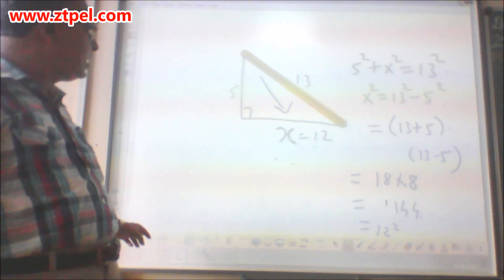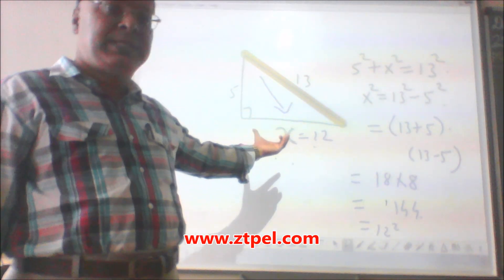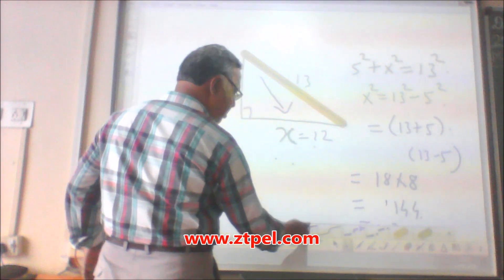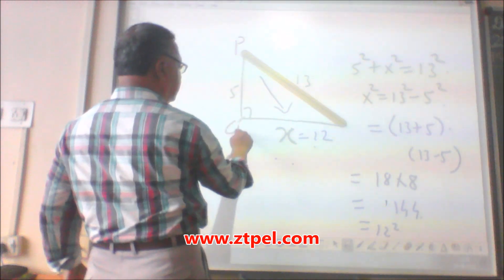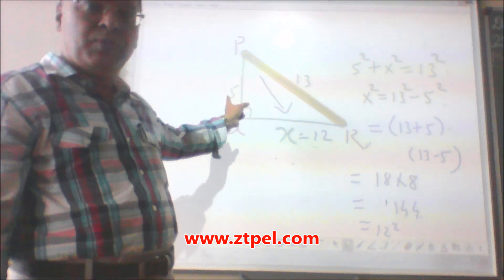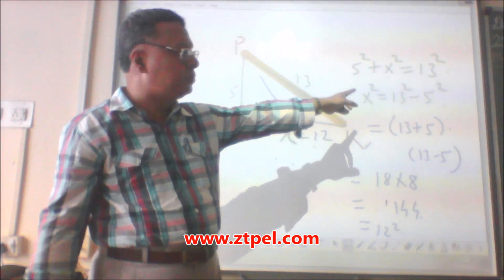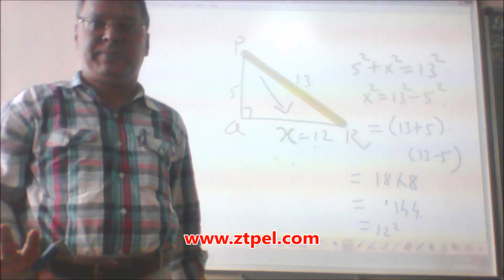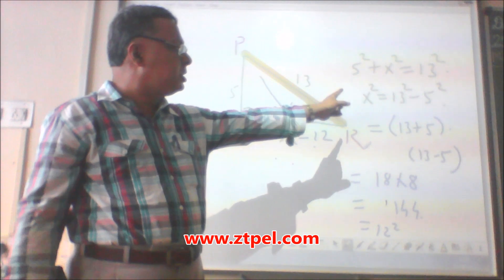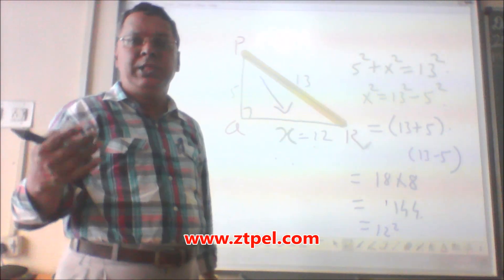Let us take another example where X is unknown — that is the base. Consider triangle PUR. Find UR, which is the base. Given one side is 13 and another side is 5, we apply Pythagoras theorem: 5 square plus X square is equal to 13 square. So X square becomes 13 square minus 5 square.